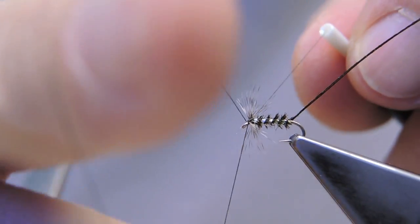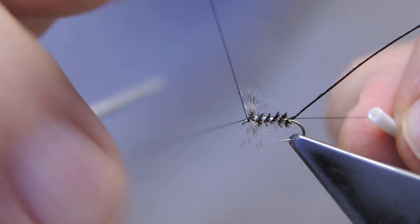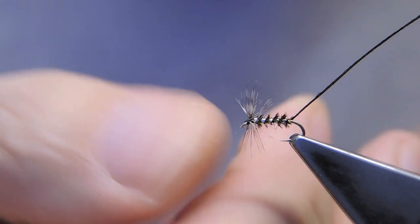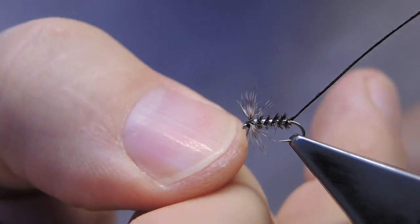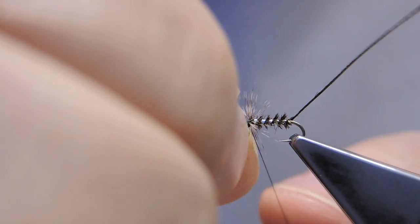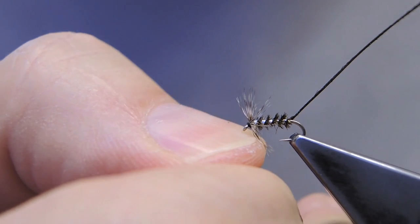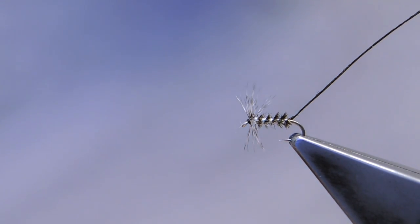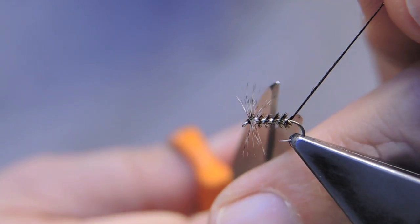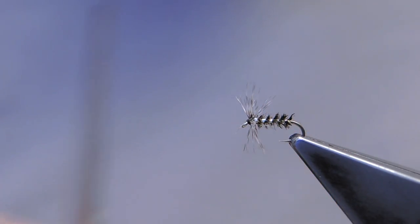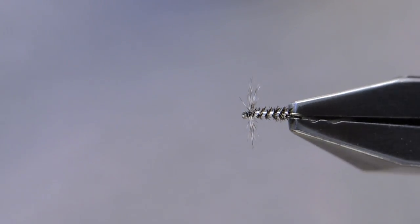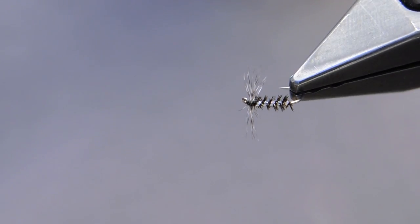Finish it off with a three turn whip finish. And also snip away the tip of the peacock hurl. This completes the Jacob pattern.